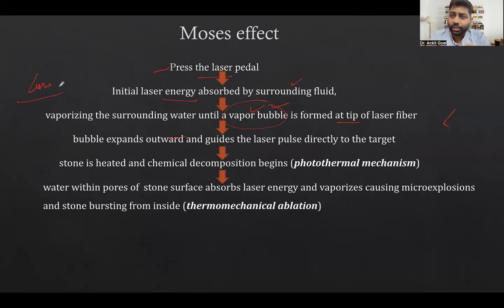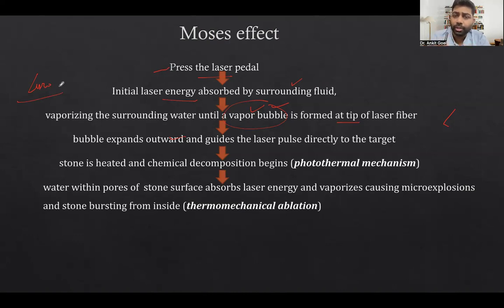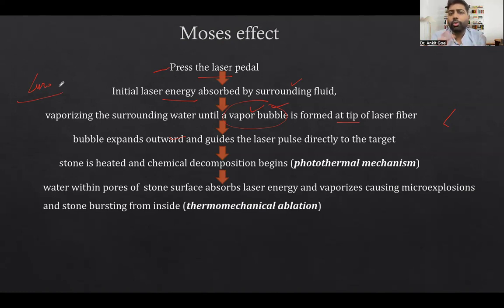When the temperature within the stone increases, the chemical bonds within the stone disrupt. There may be sulfide bonds, calcium oxalate bonds, or other bonds forming the stone — these are broken down, so the stone also breaks chemically. This is known as the photochemical mechanism. The conversion of thermal energy into mechanical fragmentation of the stone is known as the thermomechanical effect.